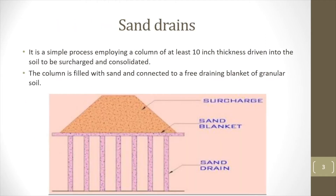So sand drain — it is a simple process in which we insert a column of at least 10 inches into the ground that is to be consolidated. The column is then refilled with sand and connected to a free-draining blanket of granular soil. In the figure, you can see that we construct vertical sand drains into the soil, and over this we provide a sand blanket for proper drainage, and above this we add a surcharge of embankment. Once this surcharge load is applied over the sand blanket, it starts to consolidate the soil and the expelled water will go to the sand drain.